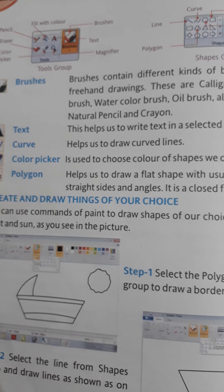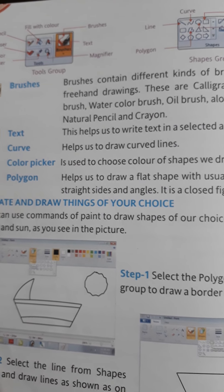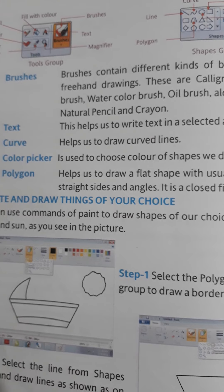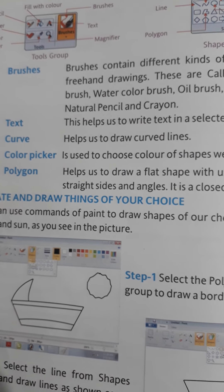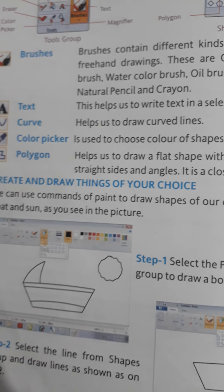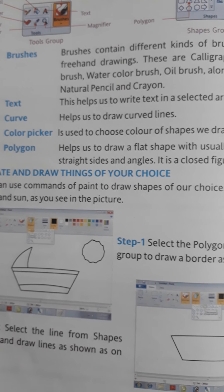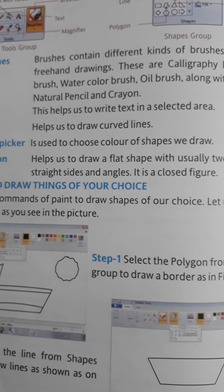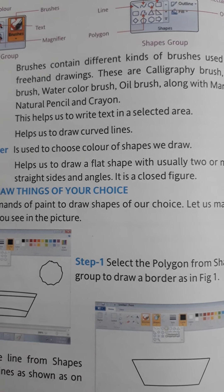The Color Picker tool is used to pick a color from an existing drawing, and if you want to use that color in a different drawing, we can use the Color Picker tool. Next is the Polygon tool — it helps us to draw a flat shape.